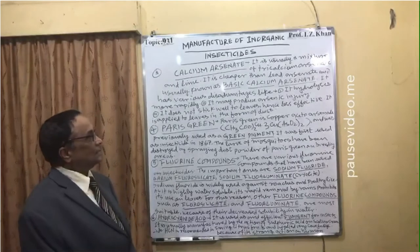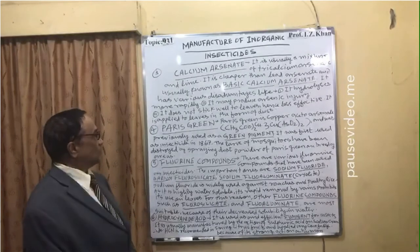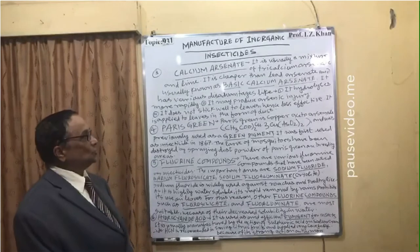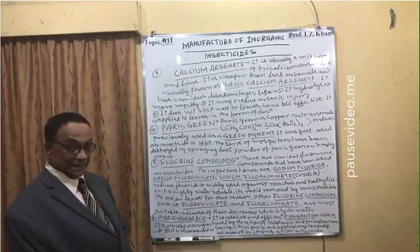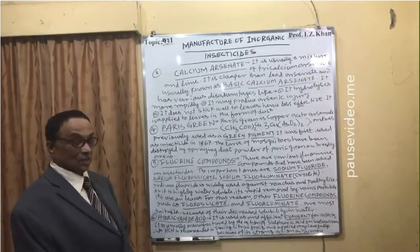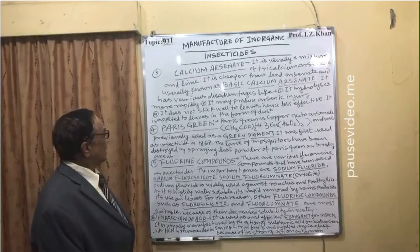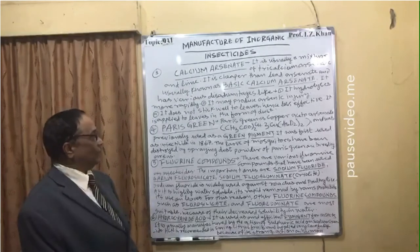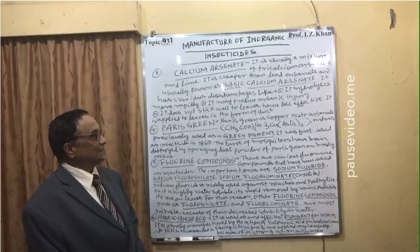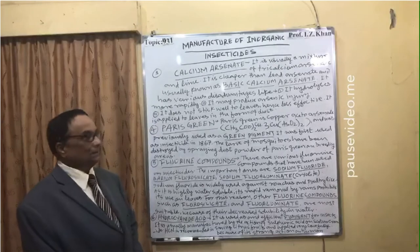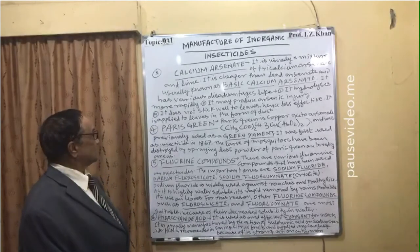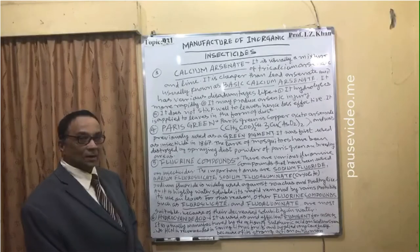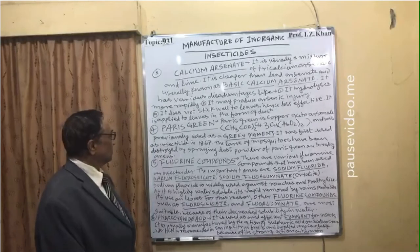Calcium arsenate has various disadvantages: one, it hydrolyses more rapidly; two, it may produce arsenic injury on humans; and three, it does not stick well to leaves, making it less effective. It is applied to leaves in the form of dust.